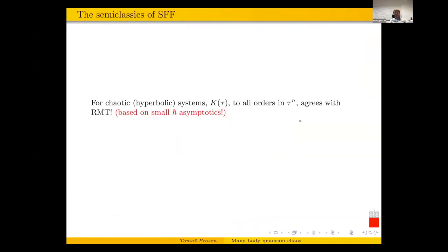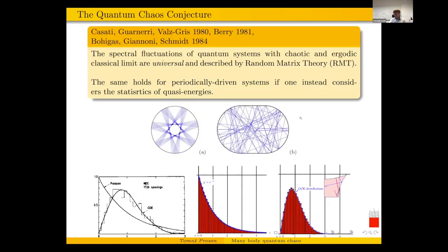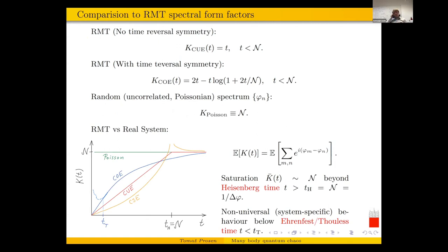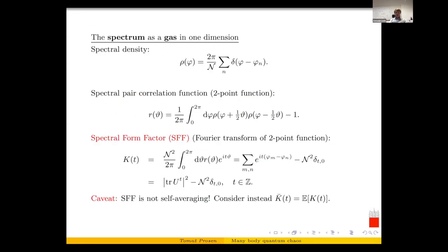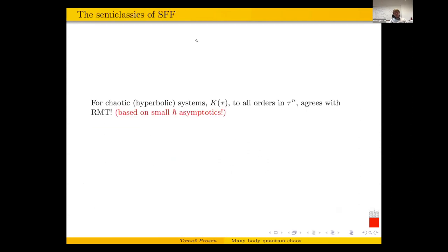People now understand why the BGS conjecture is true, even if not proven mathematically. They can formally expand the spectral form factor to all orders in τ, or equivalently to all orders in ℏ. The first and most intuitive result is already due to Berry from 1985 — the so-called diagonal approximation — which expresses the form factor using the Feynman path integral formula for semi-classical systems. You do stationary phase approximation for small ℏ and arrive at periodic orbit sums. There is a double sum, but there is a lot of destructive interference between terms, except when the two phases — two actions along orbits P and P' — are equal.